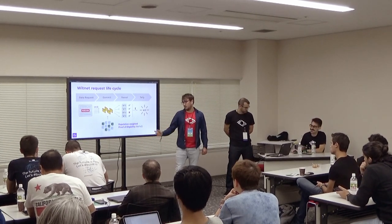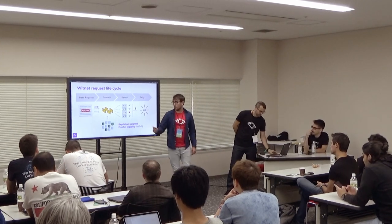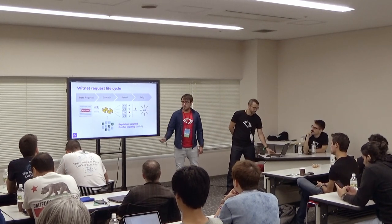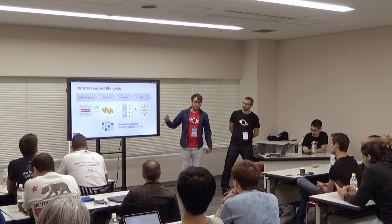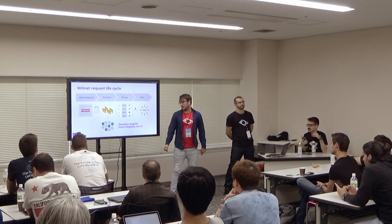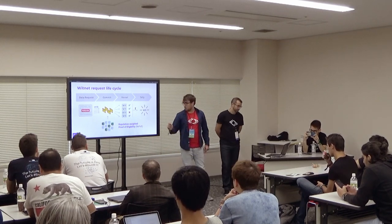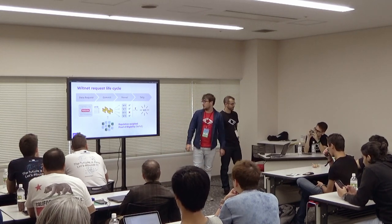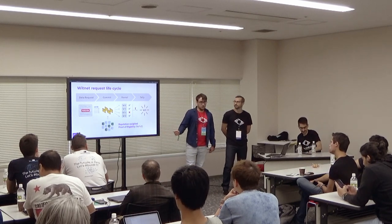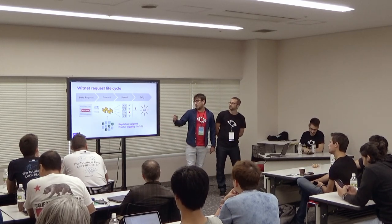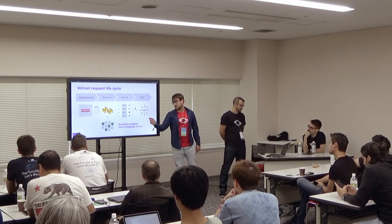Once the subcommittee of nodes is selected, they run the scripts that the data request specifies and retrieve the data point. Instead of just publishing the data point directly, they use a commit-and-reveal scheme. First they publish a secret commitment, then they reveal the values — this prevents nodes from copying each other. Once the revealed values are published, a consensus algorithm is run, after which we get a single value that can be fed into a smart contract. This is how we convert indeterminacy into determinacy.